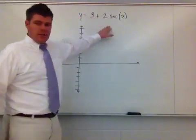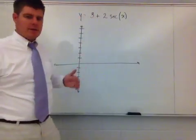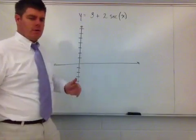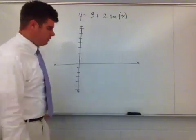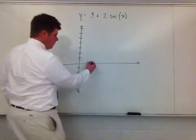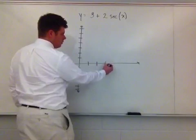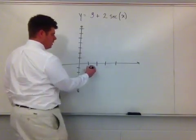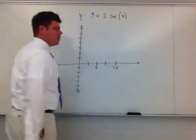Since my period doesn't change, it's still going from 0 to 2π. If I break that interval down into 4 equal parts, each step is going to be π/2. So the key x-values are π/2, π, 3π/2, and 2π.